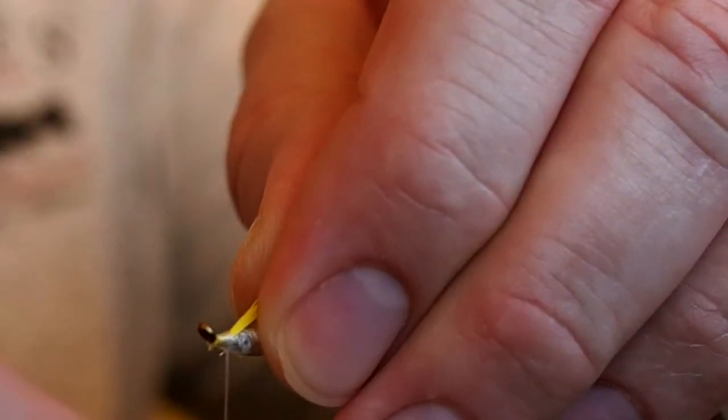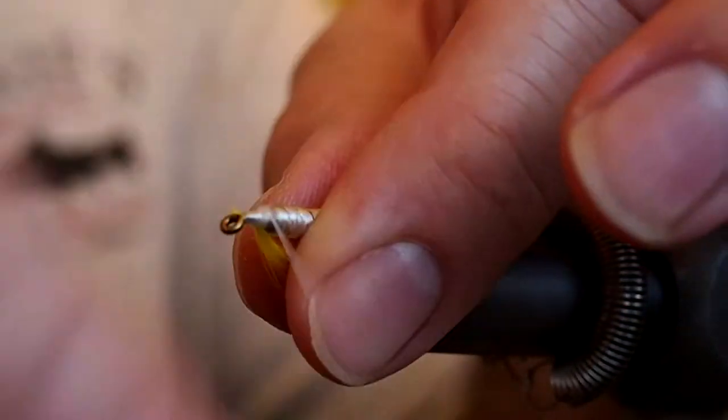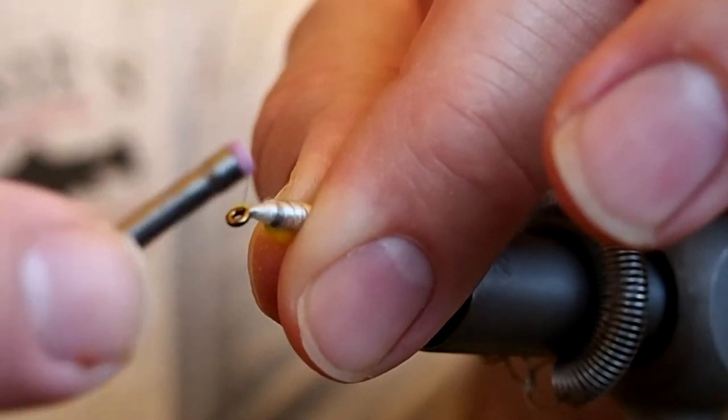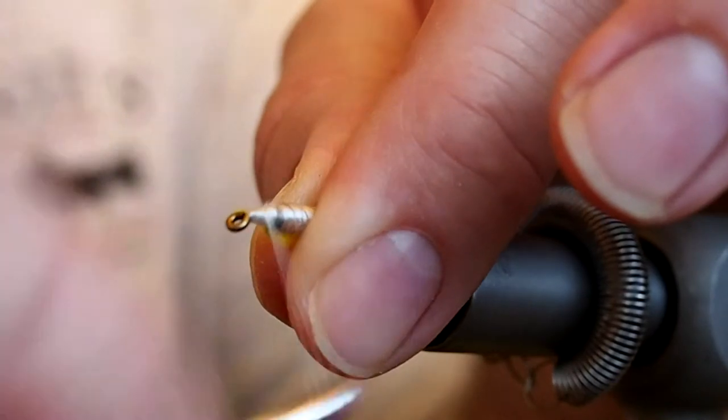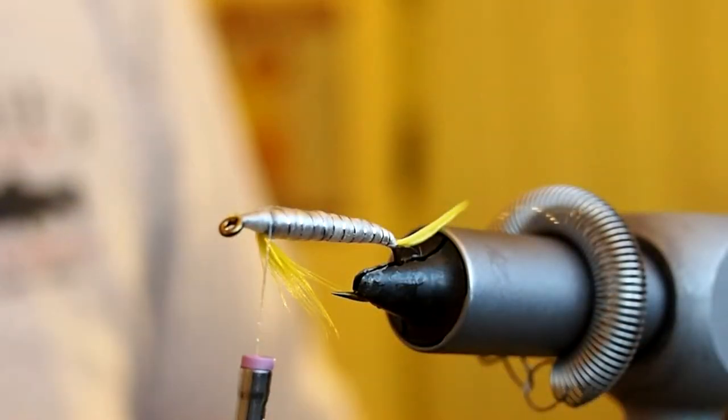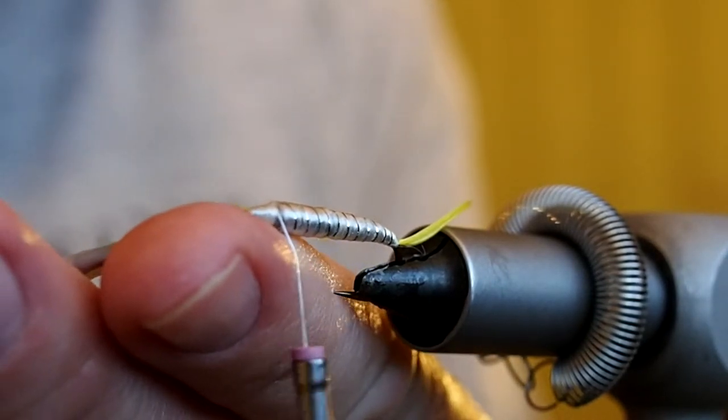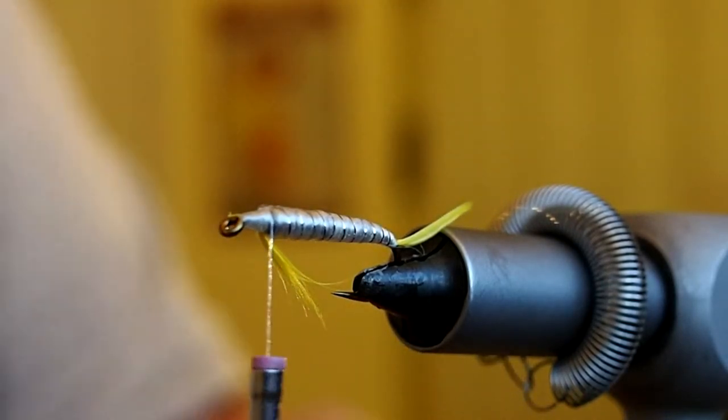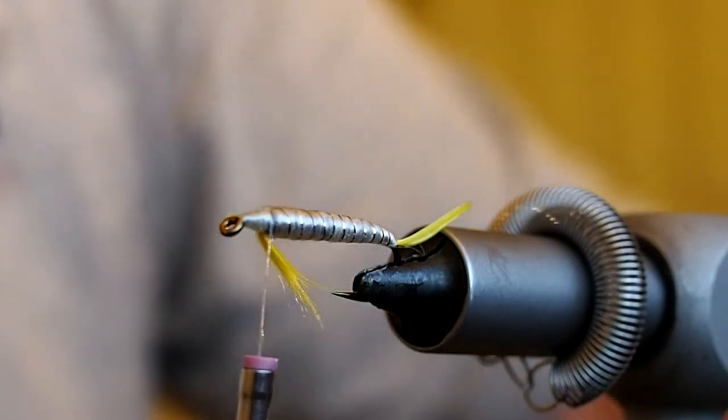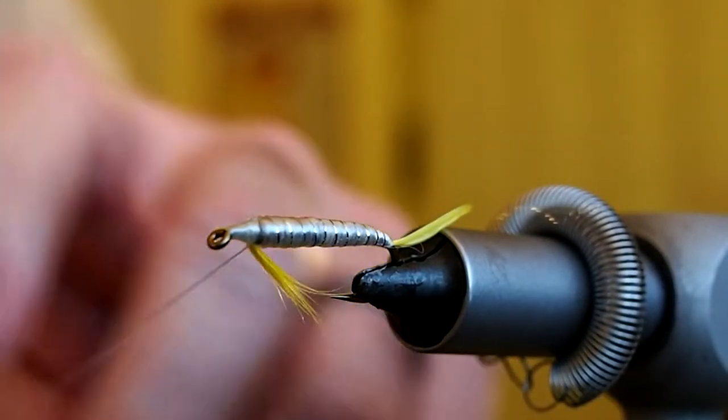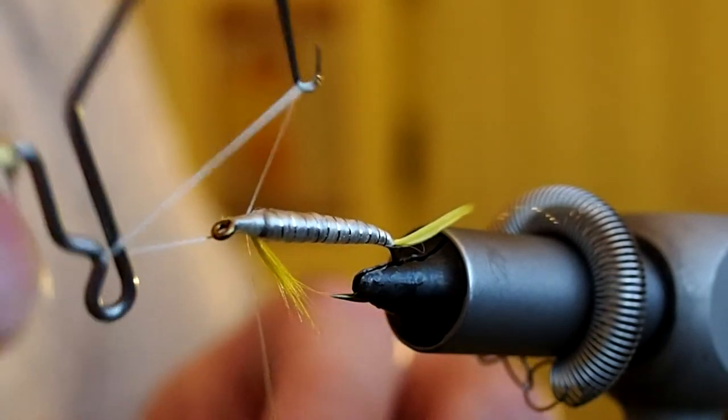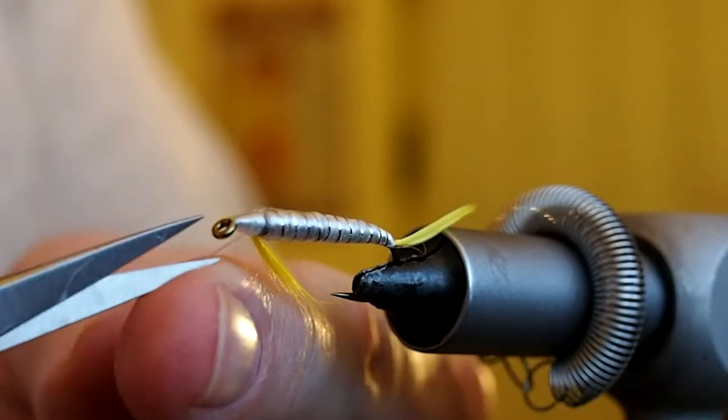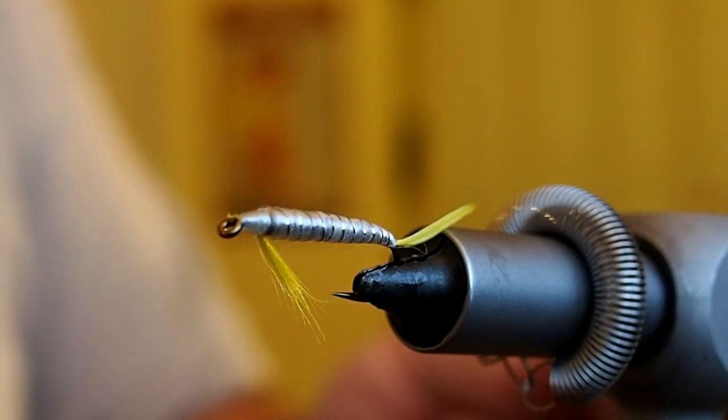So now we're going to build up a white head. A small little head. Looks pretty good. Snip these little ends here again. Alright, and we'll give a whip finish. And then snip our thread.